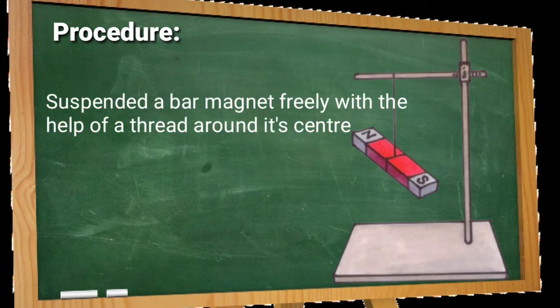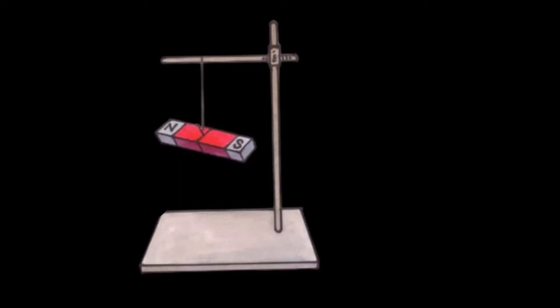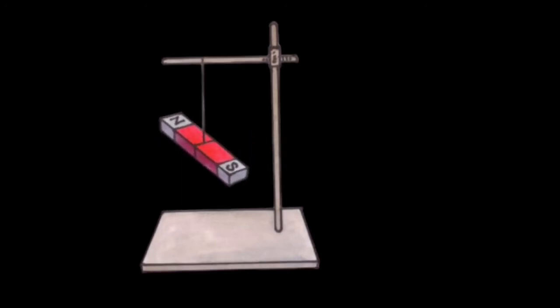The procedure to be followed: Suspend a bar magnet freely with the help of a thread around its center, as shown in the figure. Now try to answer these questions — does the magnet remain stationary? What will you observe after some time? Finally, you will observe that the magnet takes a position in the north and south direction.